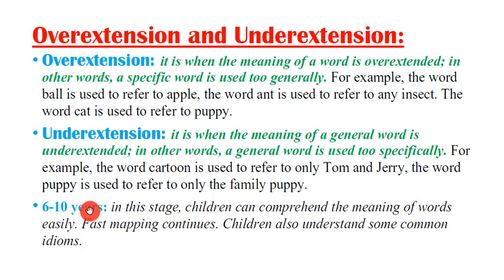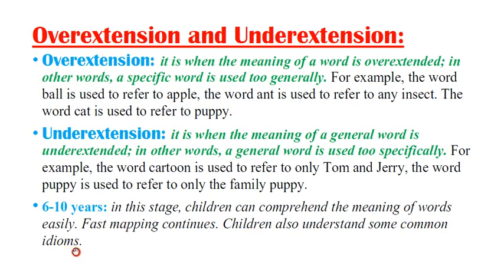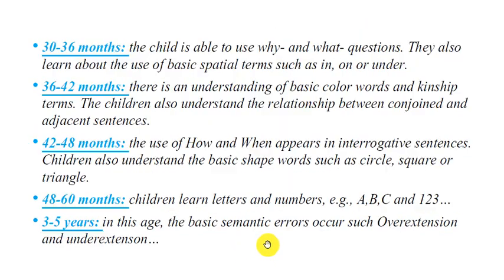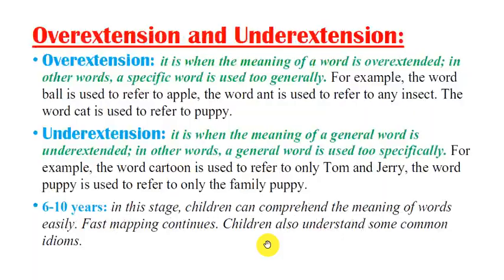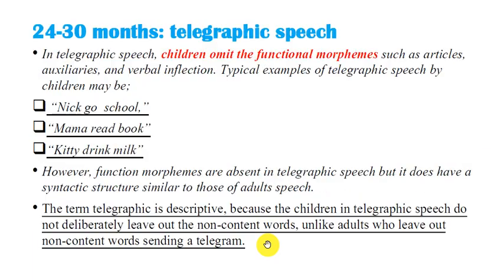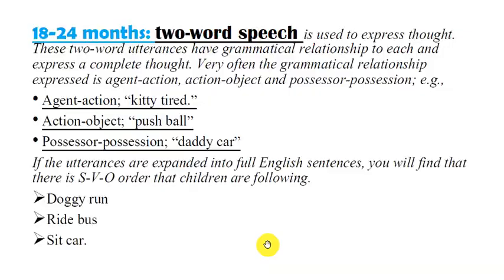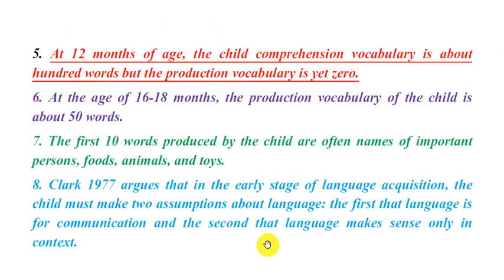At the age of six to ten years, children can comprehend the meaning of words easily, fast mapping continues, and children also understand some common idioms. This concludes our discussion about the acquisition of semantics by children, or semantic development in children's language. Thanks for watching the video.